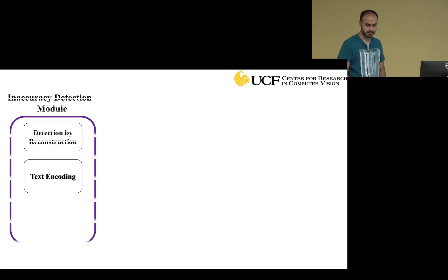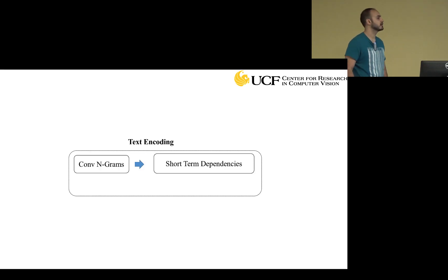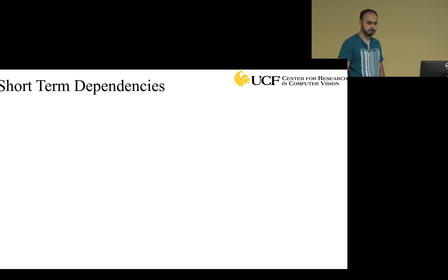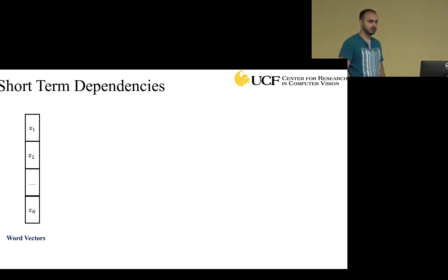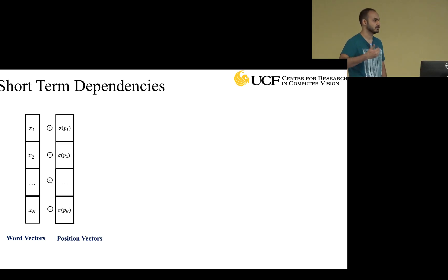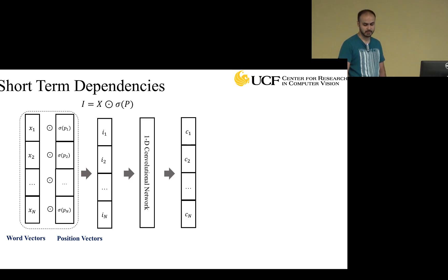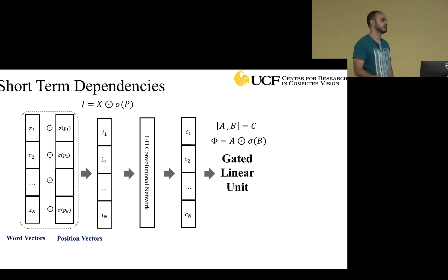For the textual encoding part, to encode the inaccurate sentence we use convolutional n-grams to capture short-term dependencies and LSTMs to capture long-term dependencies. The output is the x-hat-t we discussed. For short-term dependencies, we reconstruct each word based on its neighboring words. Given the word vectors x1 to xn and their position vectors — first, last, middle — we gate each word vector with its position, pass it to a one-dimensional convolution, and apply a gated linear unit as a non-linearity. The gated linear unit is a popular non-linearity in NLP.